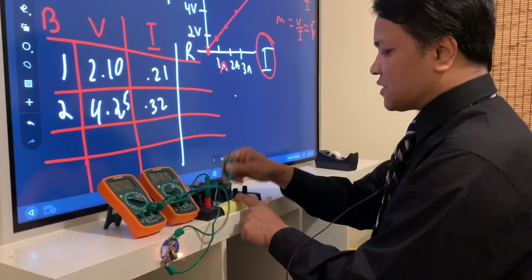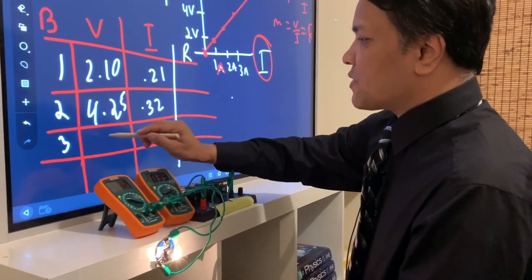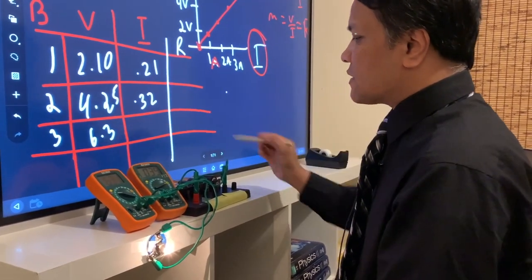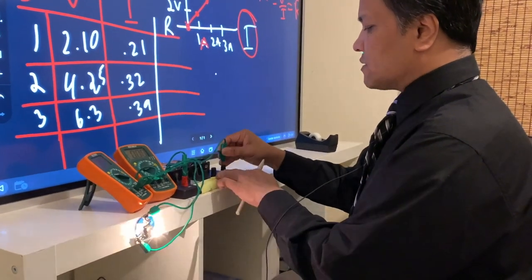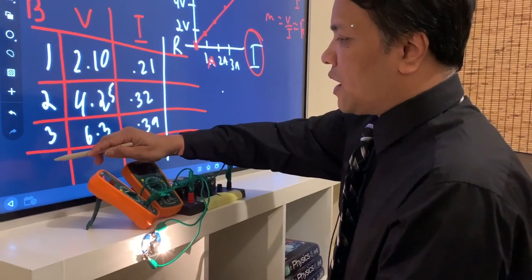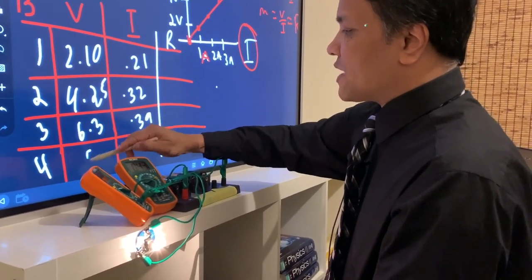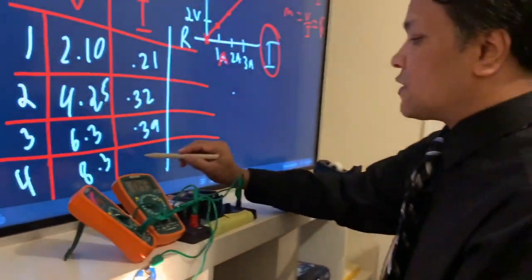Now you're going to put 3 batteries. And we see 6.3 volts and the current is 0.39. And finally, 4 batteries. I keep checking the brightness of the bulb. 4 batteries, we have 8.3 volts and 0.43 amps.